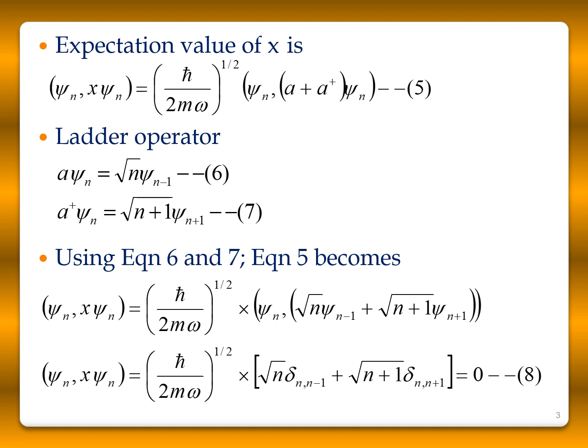Substituting these results, the expression becomes (ℏ / 2m omega)^(1/2) times [√n ⟨ψ_n | ψ_(n−1)⟩ + √(n+1) ⟨ψ_n | ψ_(n+1)⟩], which equals √n · δ(n, n−1) + √(n+1) · δ(n, n+1). By the orthogonality property, both delta functions equal zero, so the expectation value of x is equal to 0.